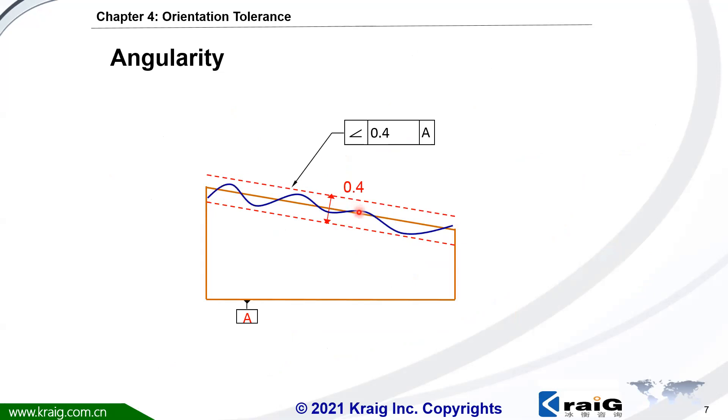angularity also controls the form deviation. Since all of the points of this surface should be inside of this tolerance zone, that means the flatness should always be smaller than this angularity.